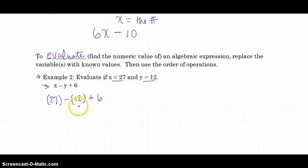And 27 minus 12. Again, order of operations. We're moving from left to right. Addition and subtraction are equal in order of operations. So 15 plus 6 and 21 is our final outcome.